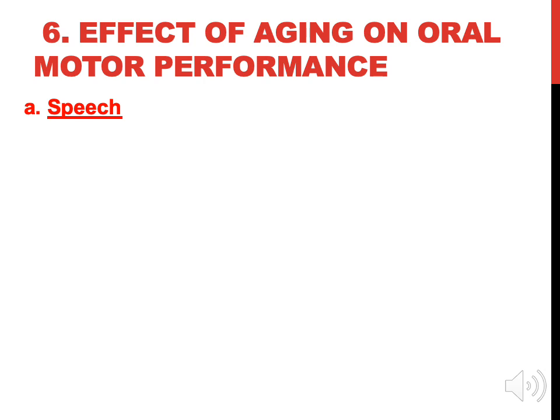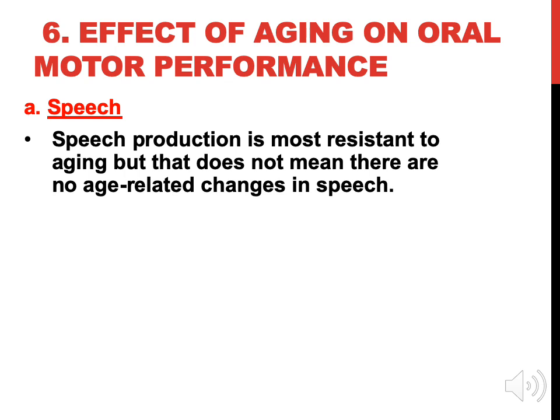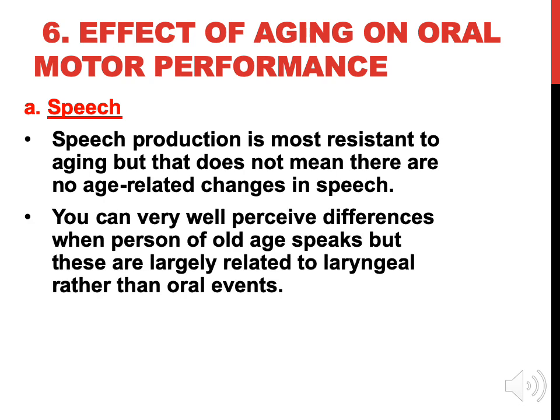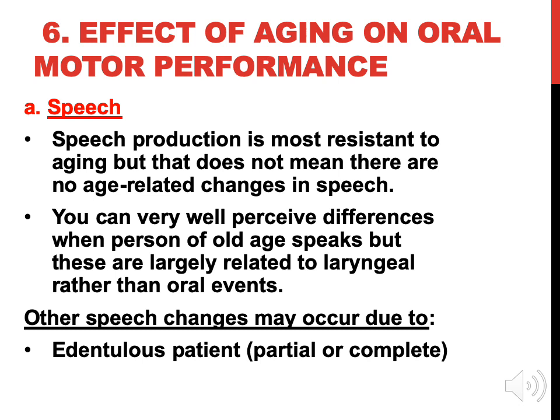Effect of aging on oral motor performance — speech: speech production is most resistant to aging, but that does not mean there are no age-related changes in speech. Differences can be perceived when an older person speaks, but they are largely related to laryngeal rather than oral events. Other speech changes may occur due to edentulous patients with partial or complete or ill-fitting prostheses.